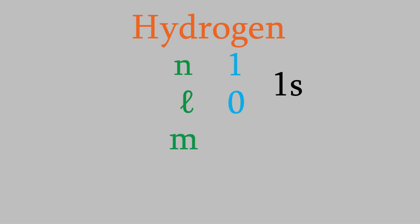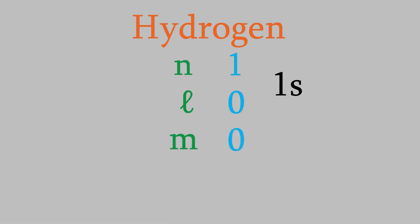Now we'll try m. M can range between negative and positive l. Since l equals zero, this means m must also be zero. And finally, let's look at the quantum number s. S can be negative or positive one-half. There's really no reason why one is any more likely than the other, so s could be either one. As we'll see later in the video, knowing these four quantum numbers actually tells us a lot about how the atom will behave and what it looks like.